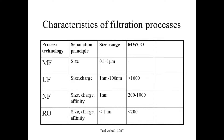Affinity also plays a role in nanofiltration and reverse osmosis. The size range of the membrane filter used in reverse osmosis is about 1 nanometer. For ultrafiltration, it is about 1 to 100 nanometers. For microfiltration, the size range is 0.1 to 1 micrometer.